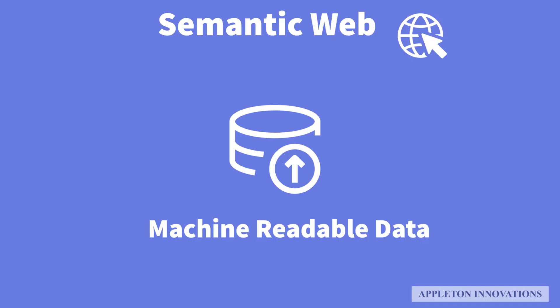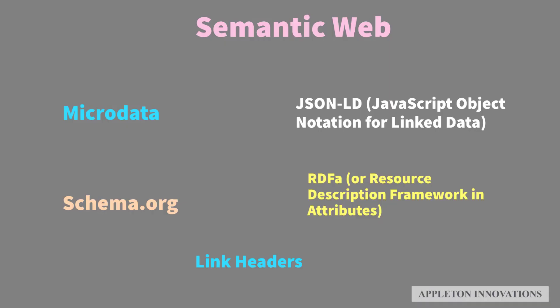Next, applying the standards of Semantic Web to Internet of Things scenarios. The Semantic Web is an extension of the World Wide Web through standards set by the World Wide Web Consortium. The goal of the Semantic Web is to make Internet data machine-readable. Semantic Web standards help to model and integrate data from different IoT devices and sources on the web. These standards include Microdata, JSON-LD (JavaScript Object Notation for Linked Data), Schema.org, and RDFa (Resource Description Framework in Attributes) and Link Headers.